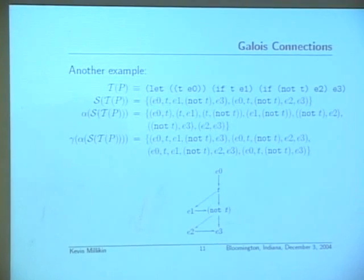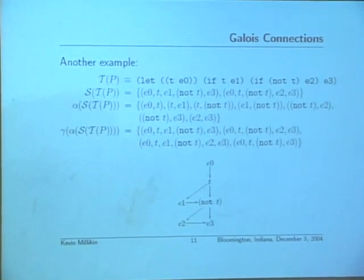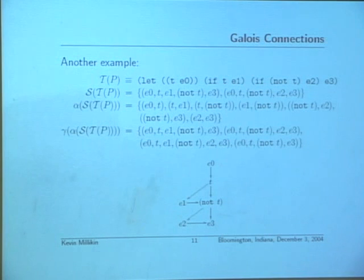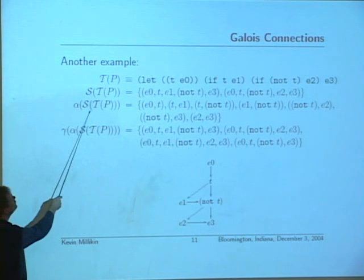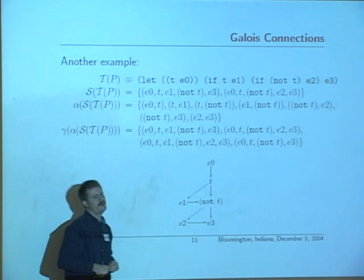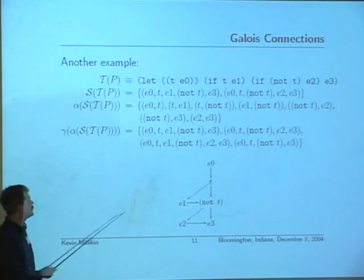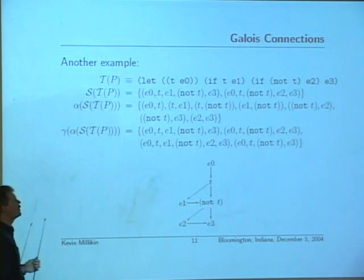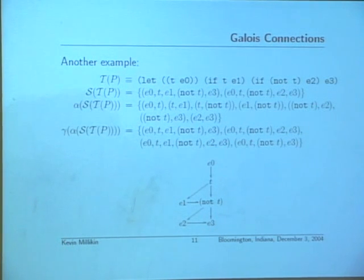Something really interesting happens with the second program. Its semantics is a pair of execution traces — two paths corresponding to when E0 is true or false. The abstraction of the semantics is a set of edges describing that graph. But concretizing this graph gives all paths through it, which includes two bogus execution traces that couldn't have occurred in the original program — one where T is true the first time and false the second, and one where it's false then true. So you get these two bogus execution traces.